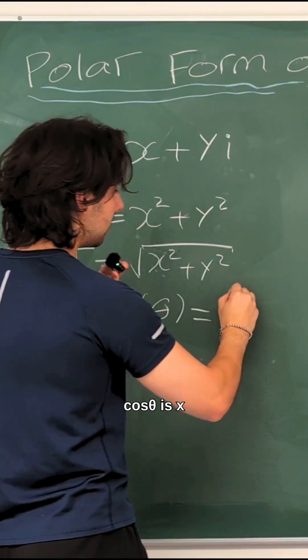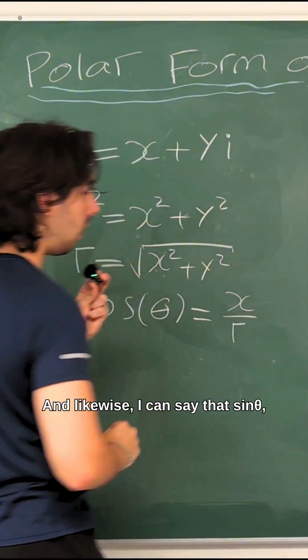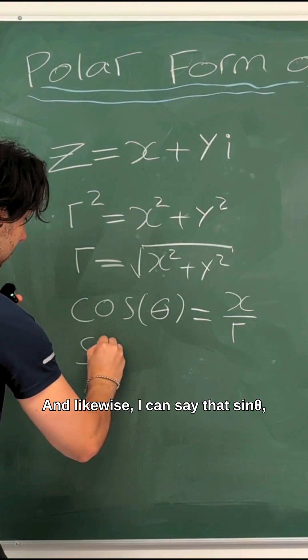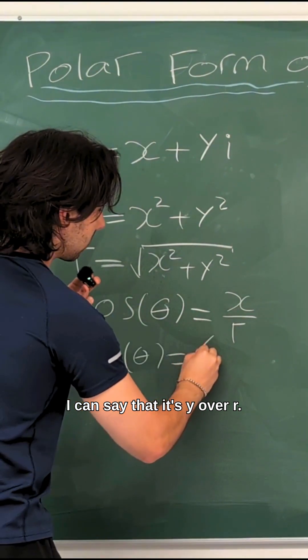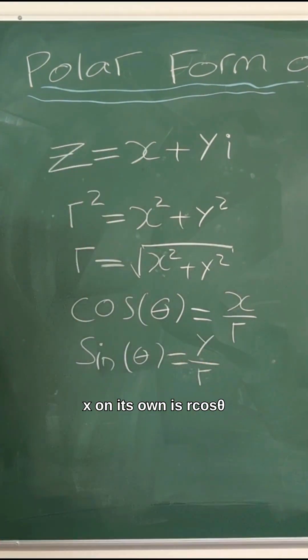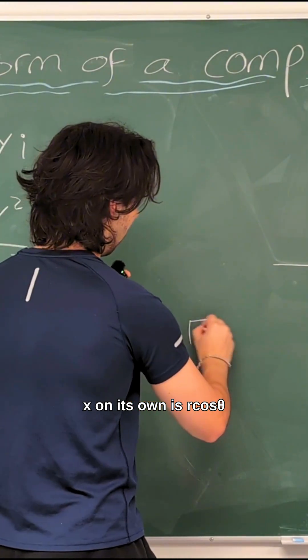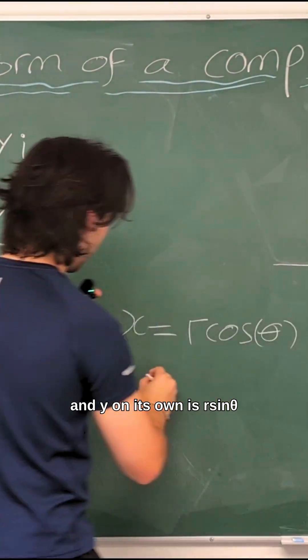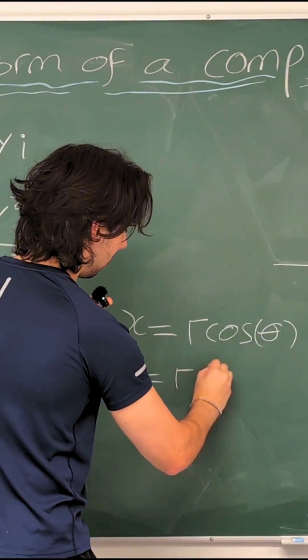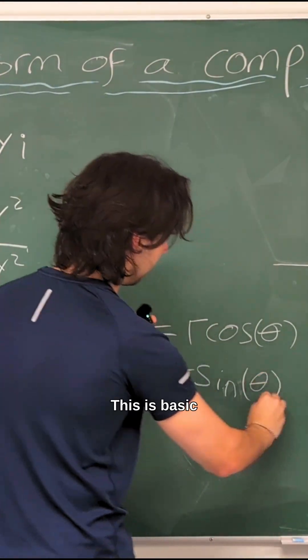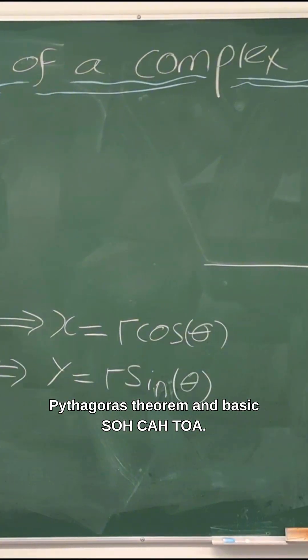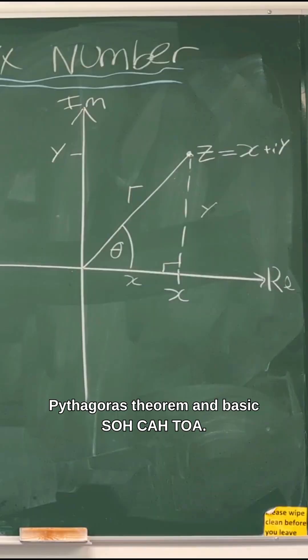Cosine of theta is x over r. And likewise, I can say that sine theta is y over r. x on its own is r cos theta and y on its own is r sine theta. This is basic Pythagoras theorem and basic SOHCAHTOA.